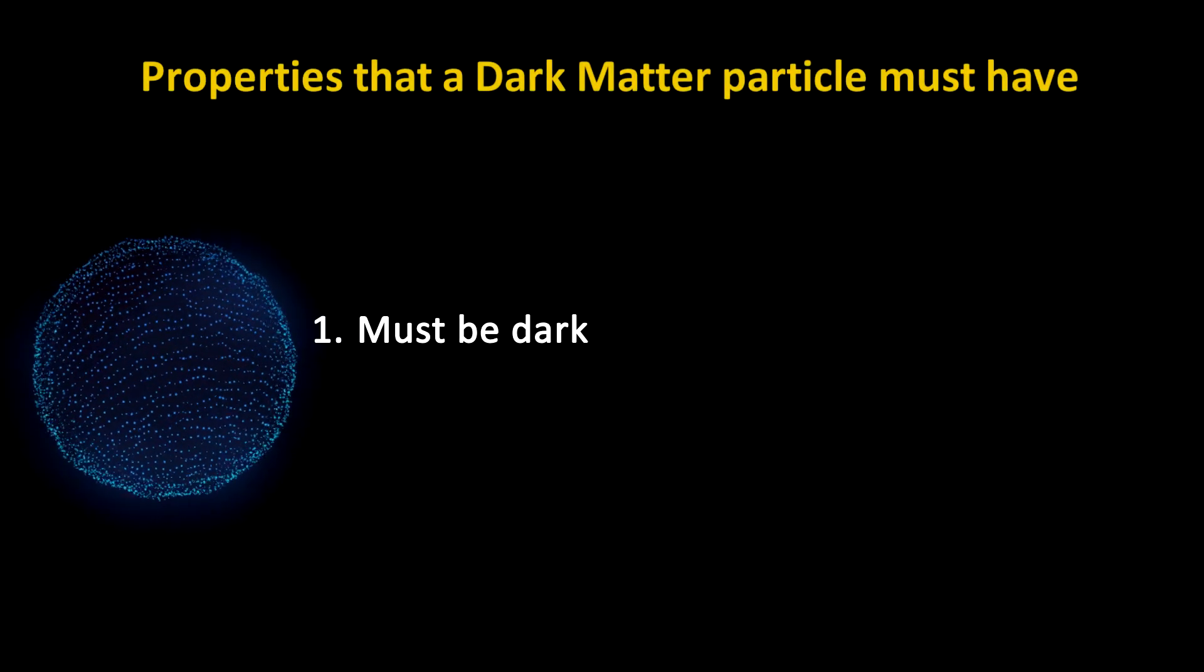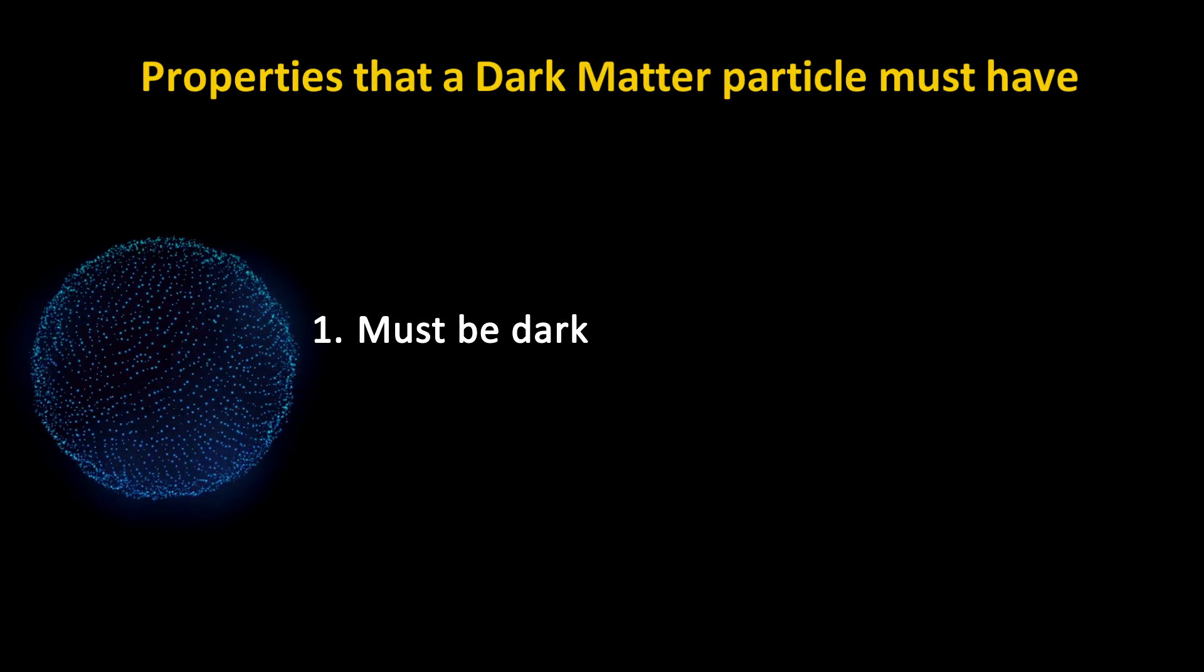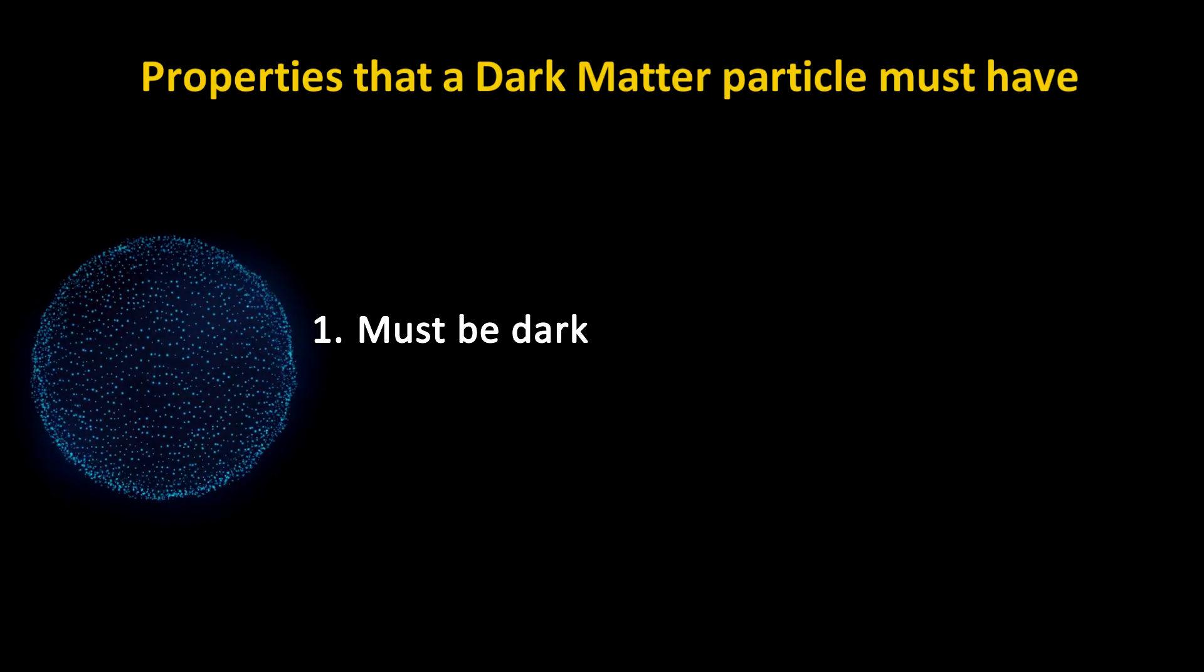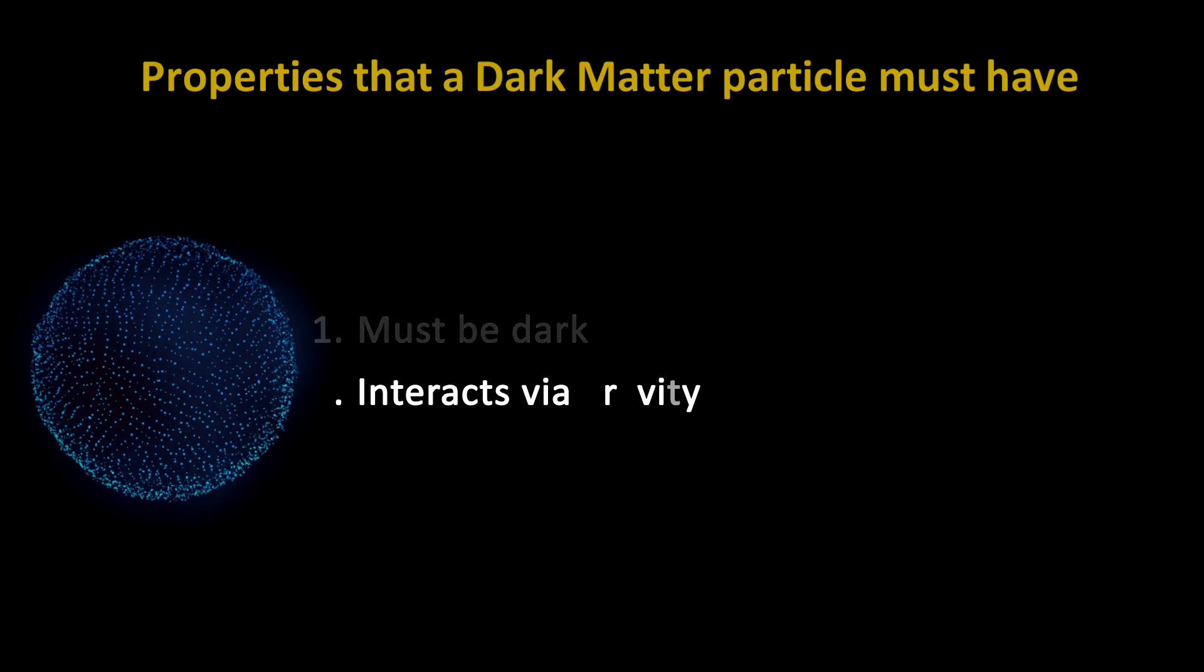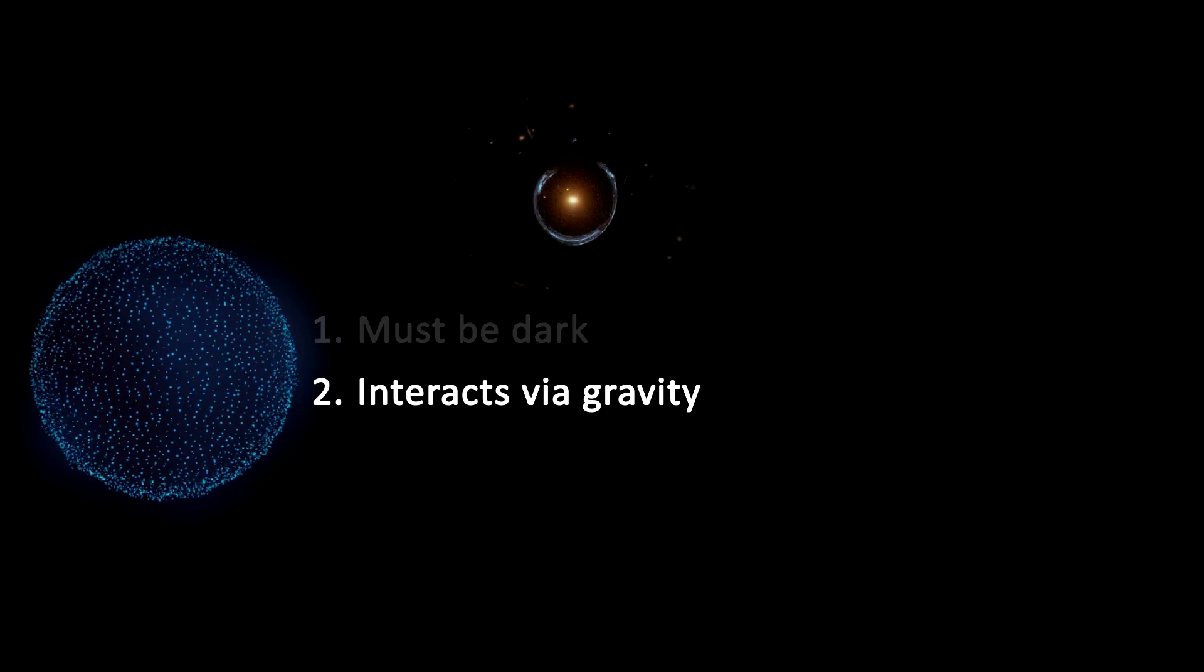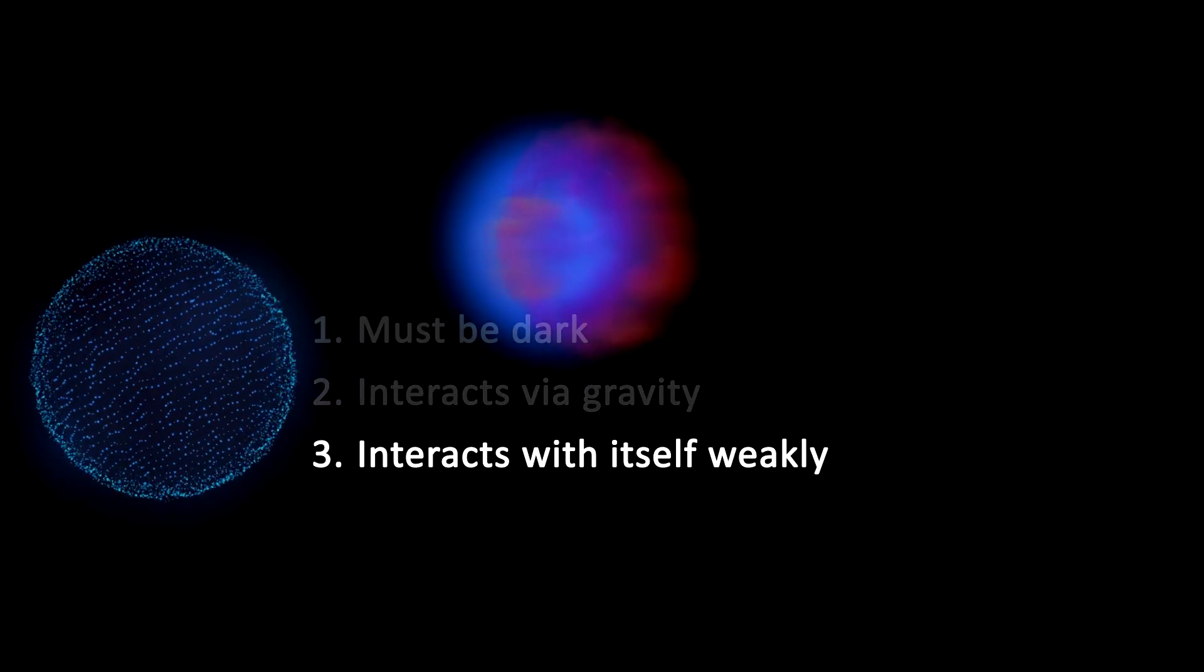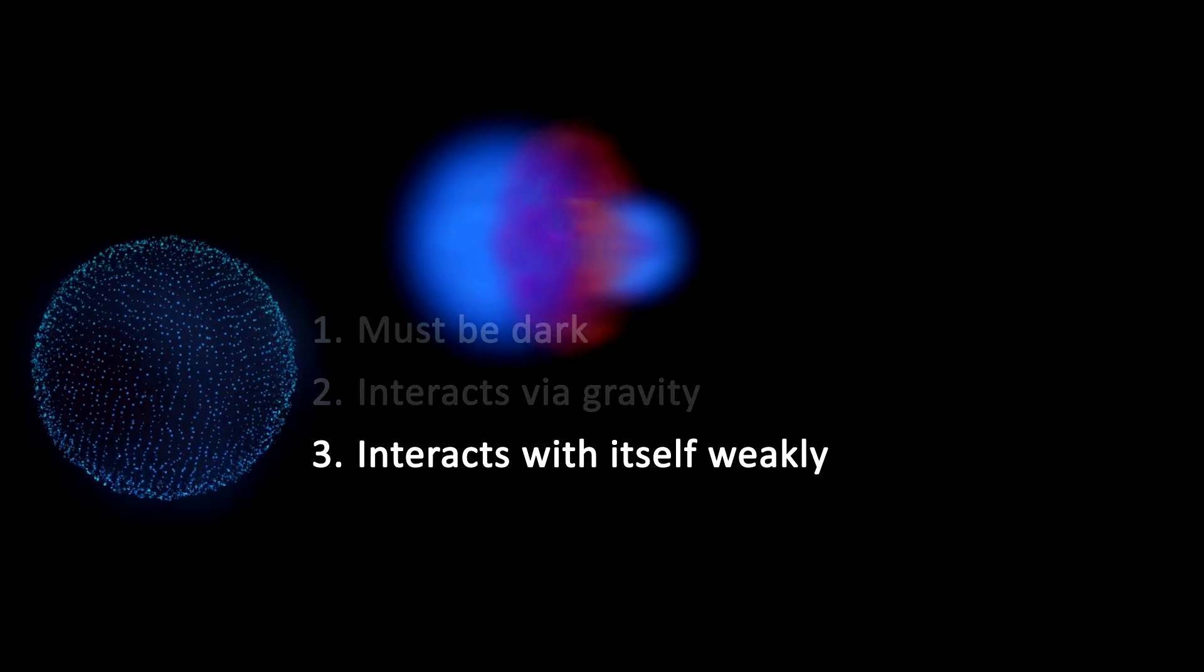So if it is not dim ordinary matter, and not due to changes in gravity, then what the heck is it? Let's look at what properties a potential dark matter particle would need to have. First, it obviously must be dark. This means it does not emit any light, and doesn't interact with anything to emit light, or any kind of electromagnetic radiation. Second, it must of course interact through gravity, so it cannot be a zero rest mass particle like photons. Third, it must not interact with itself, or interact very weakly with itself.